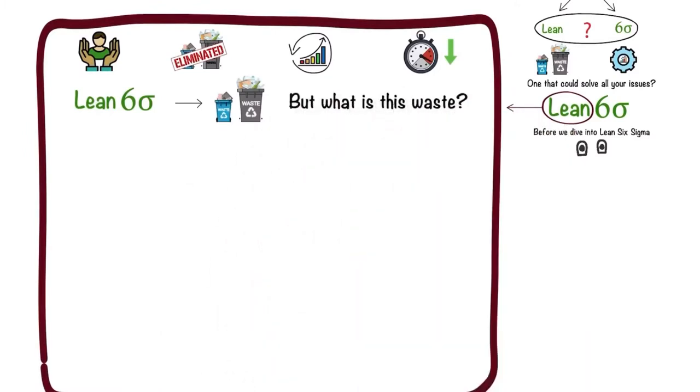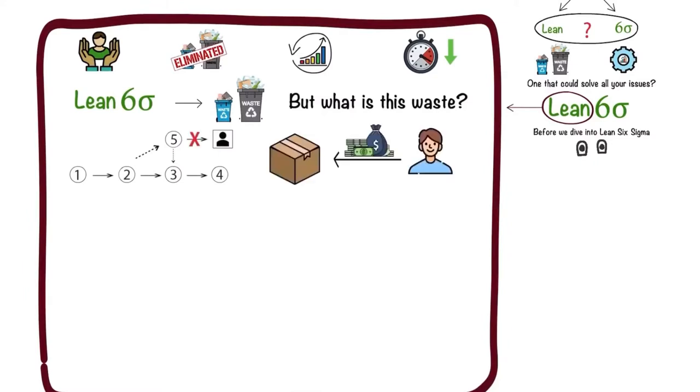Lean and Six Sigma both aim to handle waste. But what is this waste? Waste is any step or action in the process that a user does not gain any value from. In short, things that users wouldn't want to pay for.